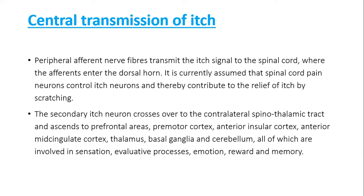Central transmission of itch: the peripheral efferent nerve fibers transmit the itch signals to the spinal cord where they enter the dorsal horn. It is currently assumed that spinal cord pain neurons control itch neurons and thereby contribute to relief of itch by scratching. Secondary itch neurons cross over to the contralateral spinothalamic tract and ascend to prefrontal areas, premotor cortex, anterior insular cortex, anterior mid-cingulate cortex, thalamus, basal ganglia and cerebellum — all of which are involved in sensation, evaluation, emotion, reward and memory. So the itch has both a peripheral and a central component.